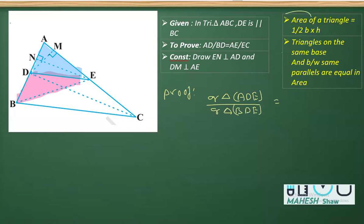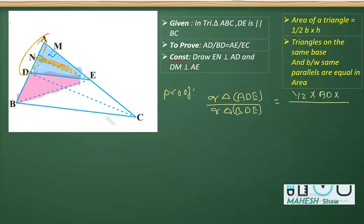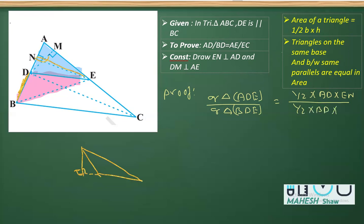We know that area of a triangle is half base into height. For triangle ADE, the base is AD and the perpendicular is EN, so that is half into AD into EN. For triangle BDE, the base will be BD and the altitude remains the same as EN — noting that the altitude may lie outside the triangle. So cancelling EN, EN and half, half, we get this ratio as AD over BD.